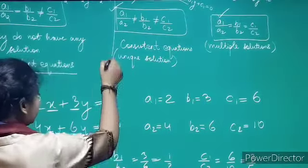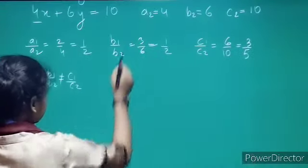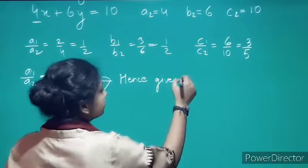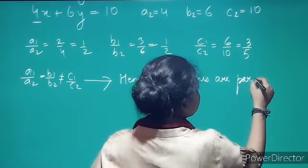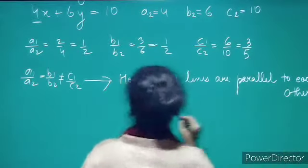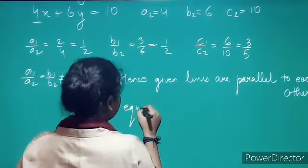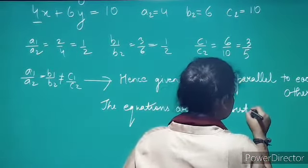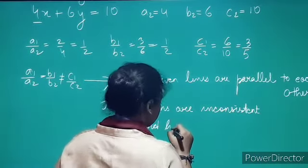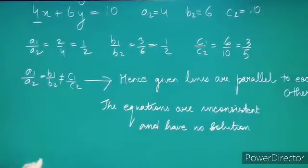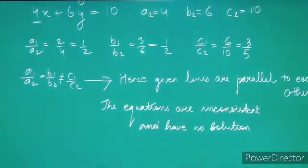This is the case of parallelism of two lines. Hence, the given lines are parallel to each other, and since they are parallel, the equations have no solution — the equations are inconsistent and have no solution. This is how we solve questions based on these conditions. This is all for today's video. Thank you.